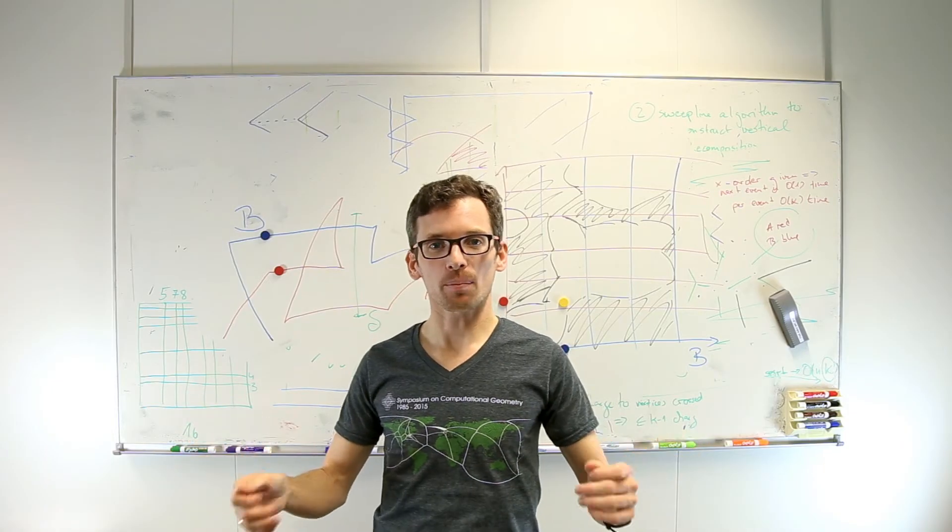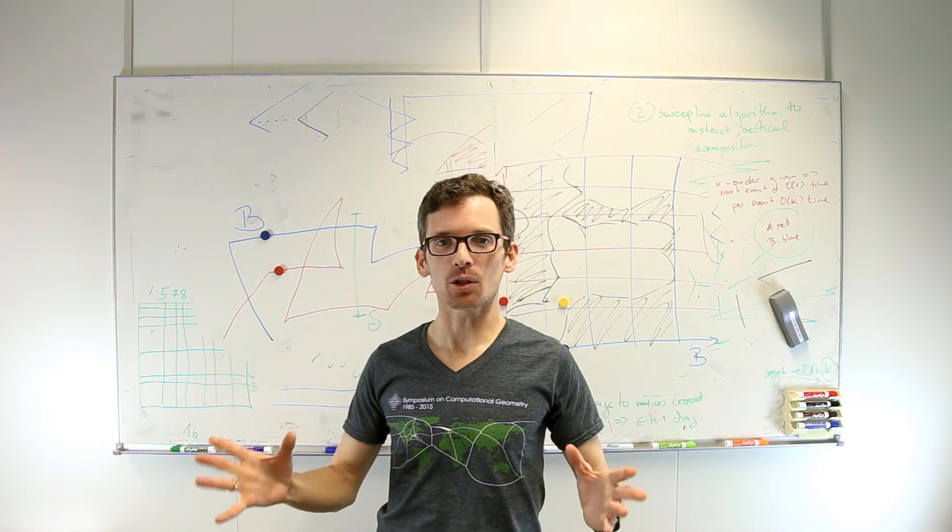We can compute the Fréchet distance by optimizing over delta, for instance using parametric search. Whether it's possible to compute the Fréchet distance in subquadratic time is still a major open question.